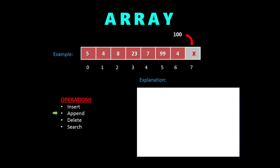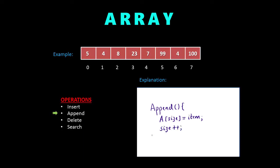The next operation is append, which is adding an item at the end of the array. Here we have an array with elements up to index 4 and the 7th index free, so we can append 100 to the 7th index. To write the code, we simply write a[size] initialized to the item, then increment size. Append is a fairly easy operation.